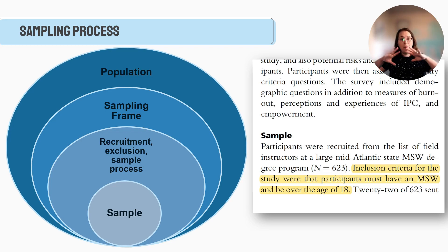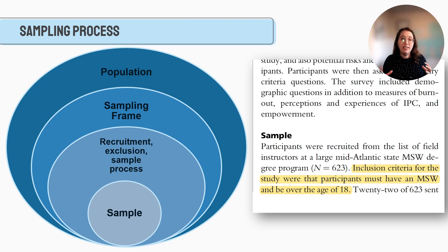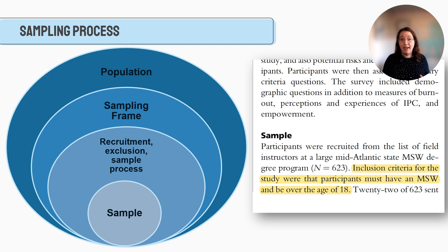So to summarize that example: the population was field instructors, the sampling frame was the list of field instructors for the MSW program, the inclusion criteria required an MSW and being over age 18, and then they used their sampling procedures to come up with their final sample.